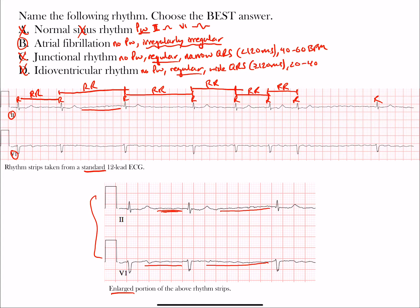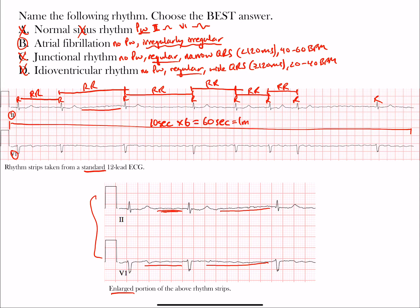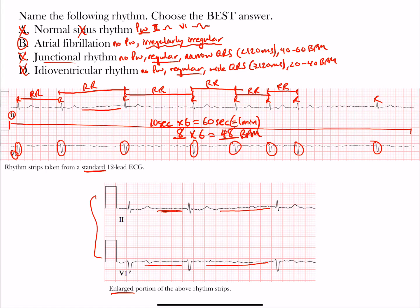Idioventricular rhythm has a normal rate between 20 and 40 beats per minute. Now let's calculate the rate here. The standard ECG from beginning to end is 10 seconds, and 10 seconds times 6 equals 60 seconds — one minute. So we count the QRS complexes across the strip and multiply by 6. Counting: 1, 2, 3, 4, 5, 6, 7, 8 — that's 8 QRS complexes. 8 times 6 equals 48 beats per minute, which is a slow rate, less than 60.